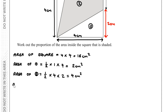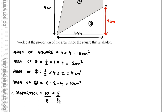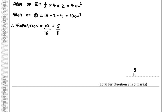The area of section 2 equals total area 16, take away area of section 1 (which is 2), take away area of section 3 (which is 4). So area of section 2 equals 10 centimetres squared. Therefore, the proportion of the area inside the square that is shaded equals 10 divided by 16, which simplifies to 5 over 8.